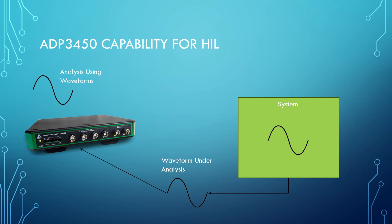A very interesting feature of the ADP3450 is that besides viewing the waveform and analyzing it, you can even run a fast Fourier transform. Additionally, we also have the option to filter the signal. Let's say we found some high frequency noise in our signal and we don't know exactly where it's coming from.